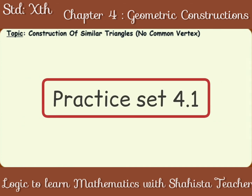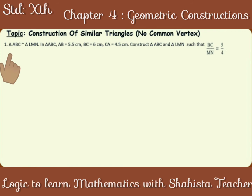Practice set question number 1. Triangle ABC is similar to triangle LMN. In triangle ABC, AB is equal to 5.5 cm, BC is equal to 6 cm, CA is equal to 4.5 cm. Construct triangle ABC and triangle LMN such that BC upon MN is equal to 5 upon 4. Before constructing the triangles, let's find the length of the three sides of triangle LMN.